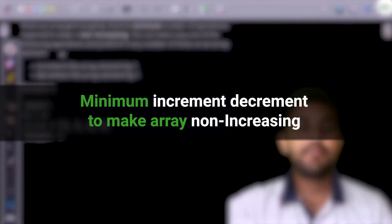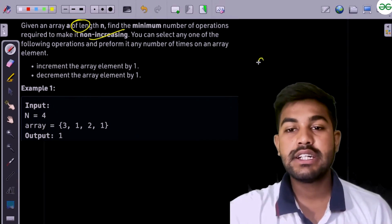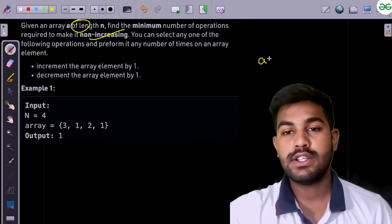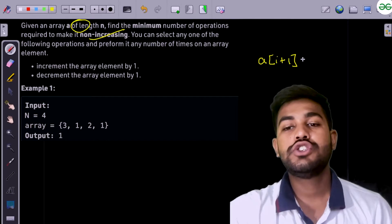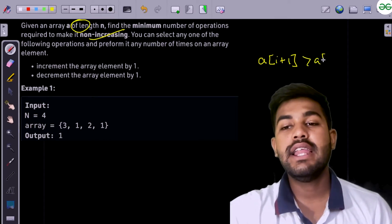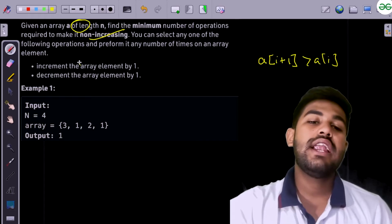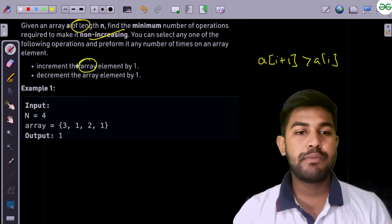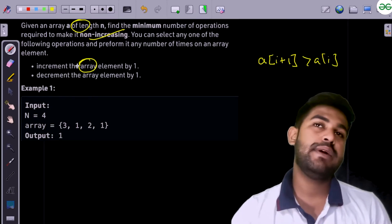Hi, in this problem, we are given an array of length n and we need to make it non-increasing. That is, for each element, this condition should be false. That is, a of i plus 1 should never be greater than a of i. And we need to calculate the minimum number of operations where we can increment or decrement each element by one.